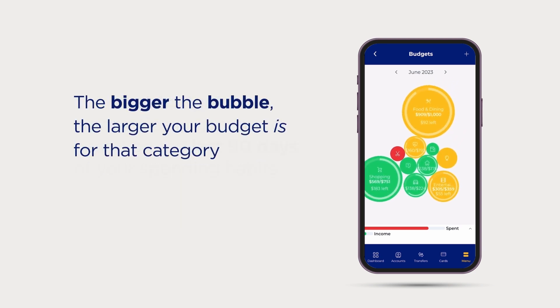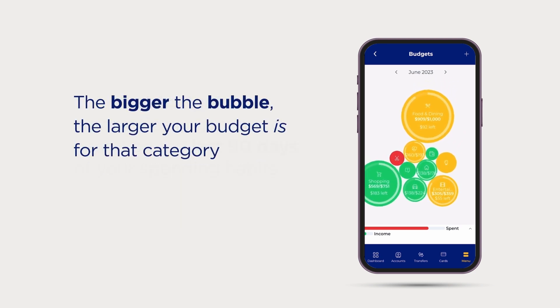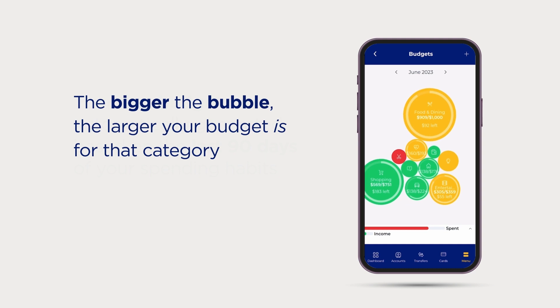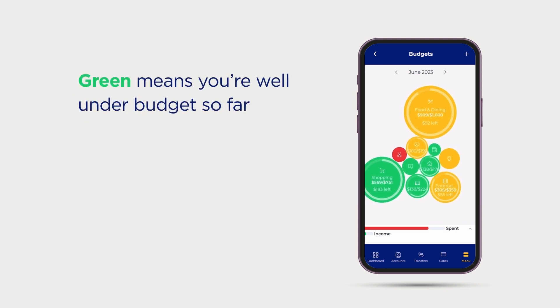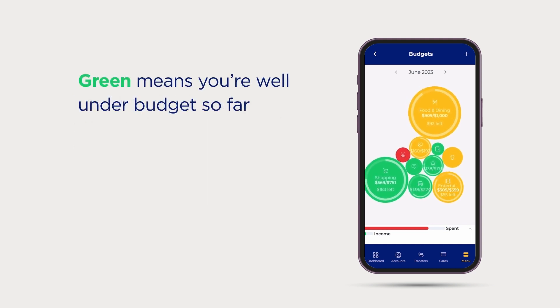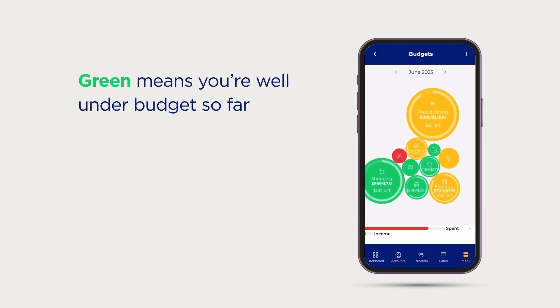The bigger the bubble, the larger your budget is for that category. Green means you're well under budget so far — great job!